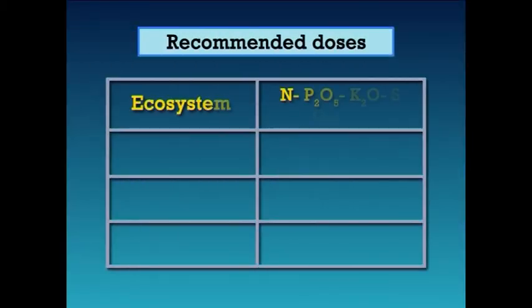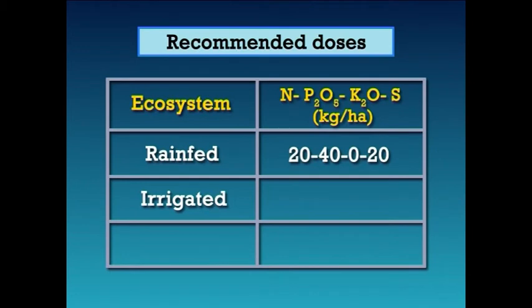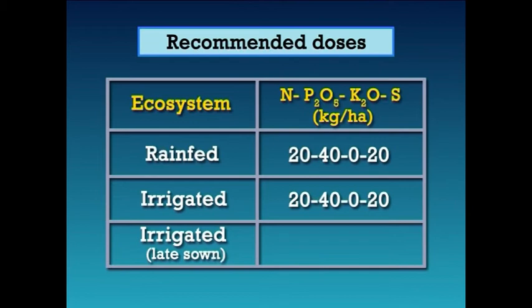Potassium is not required unless acute deficiency is observed. The recommended doses are: for rain-fed ecosystems — 20, 40, 0 and 20 N, P, K, S per hectare; under irrigated conditions — 20, 40, 0 and 20 N, P, K, S per hectare; and under irrigated late sown conditions — 30, 40, 0 and 20 N, P, K, S per hectare.